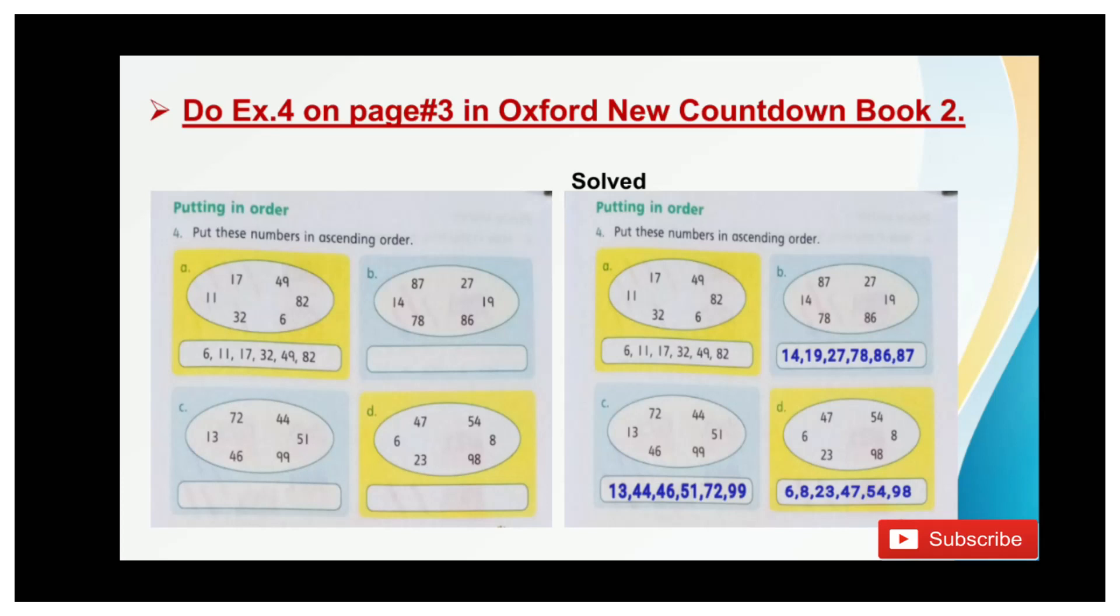In part D, what's the smallest number? Yes, it is 6, then 8, 23, 47, 54, 90. So that is how we have completed the exercise by arranging all the numbers in ascending order.